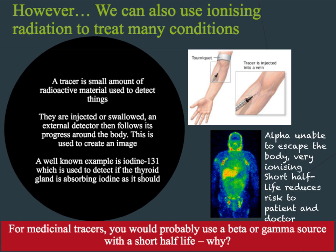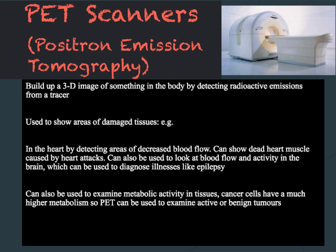Another way we can use radioactive isotopes is in the creation of positron emitters for positron emission tomography — PET scanners. PET scanners use beta-plus emitters in order to release positrons within an organ. They are used to build up a 3D image of something in the body by detecting the radioactive emissions that come from the tracer.